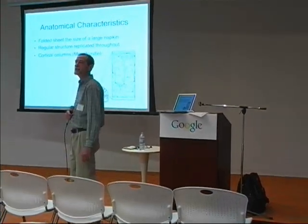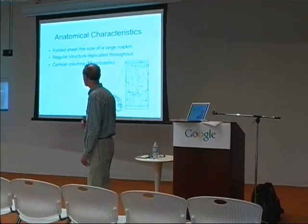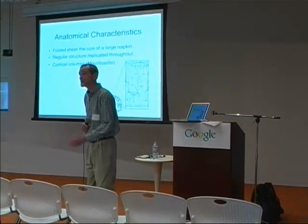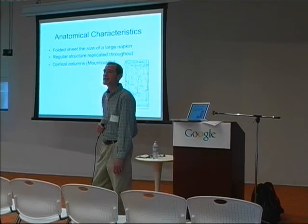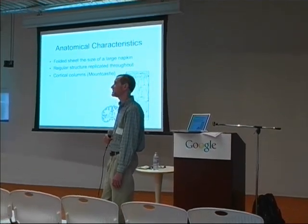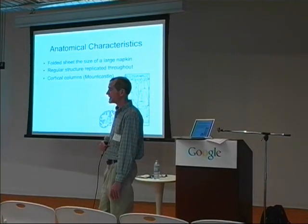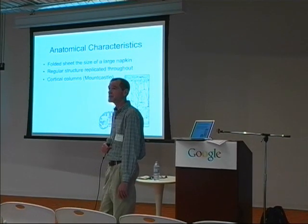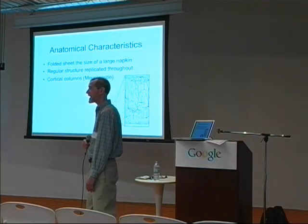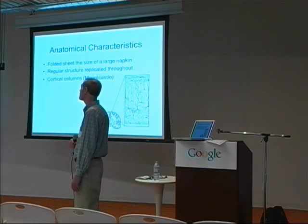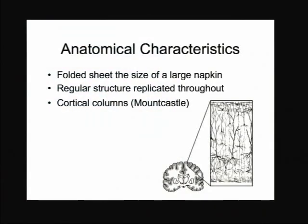The neocortex for a human is often likened to a folded sheet about the size of a dinner napkin. It's planar from a topologist's point of view, but it certainly isn't flat even if you tried to flatten it out. It has been studied probably more than any other portion of the brain, possibly because people think that it's one of the things that distinguish us from other mammals.